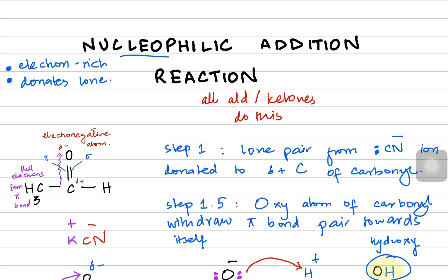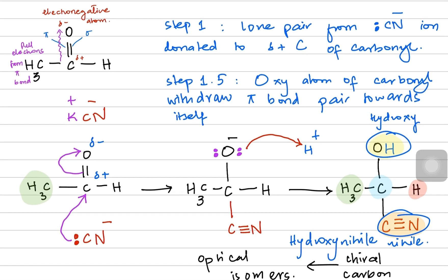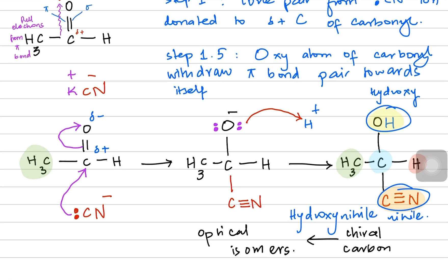To revise: the nucleophilic addition reaction involves the pi bond breakage between oxygen and carbon. The cyanide donates the lone pair to the carbon, oxygen becomes negative, and then the negatively charged oxygen accepts a hydrogen ion from the surrounding acidic environment. The species formed in the middle is our intermediate.